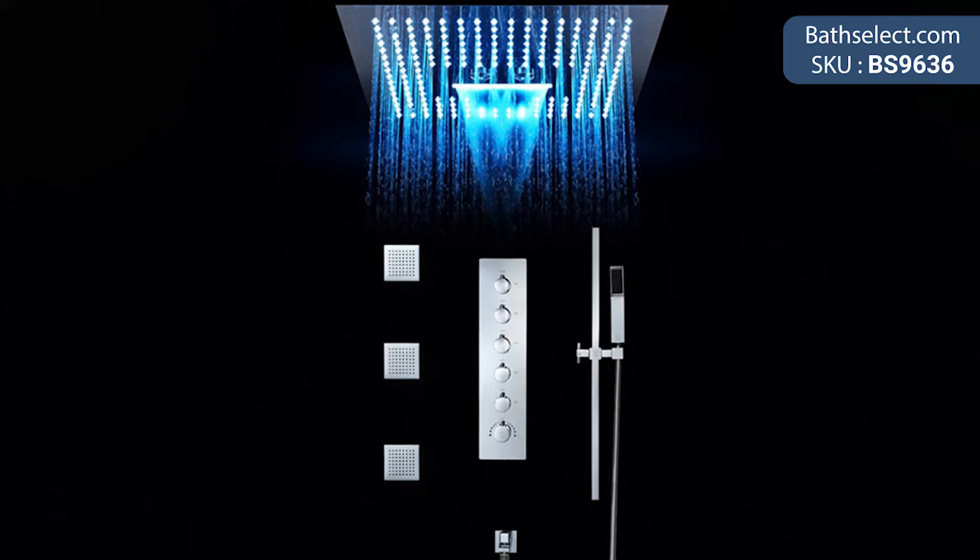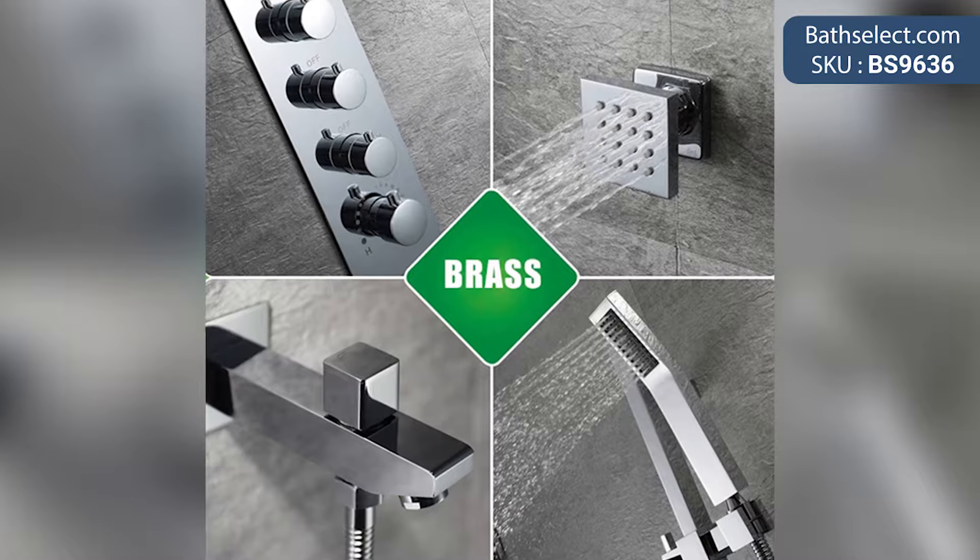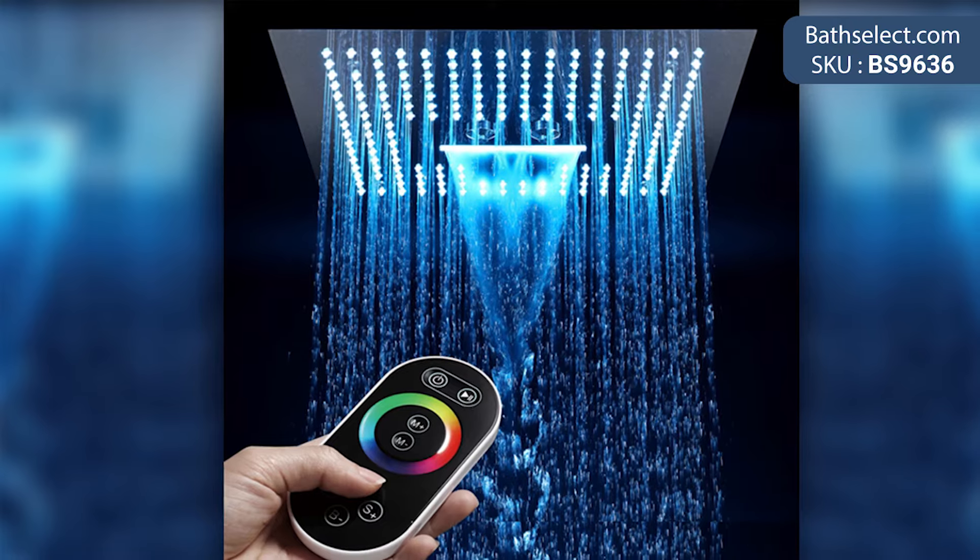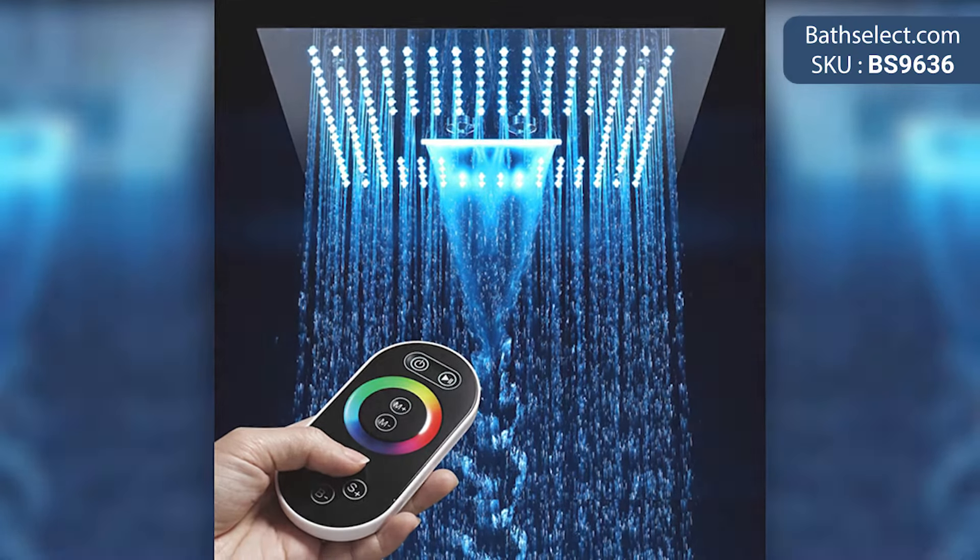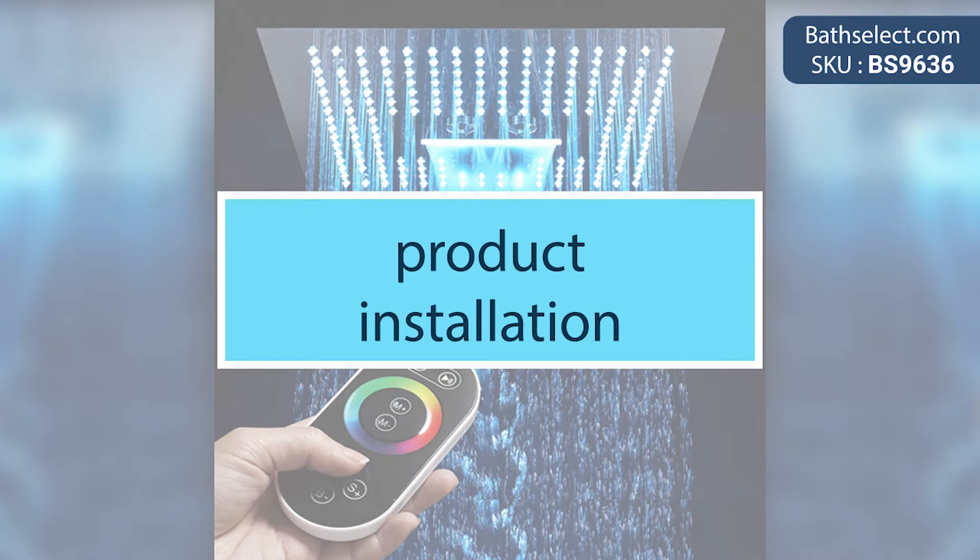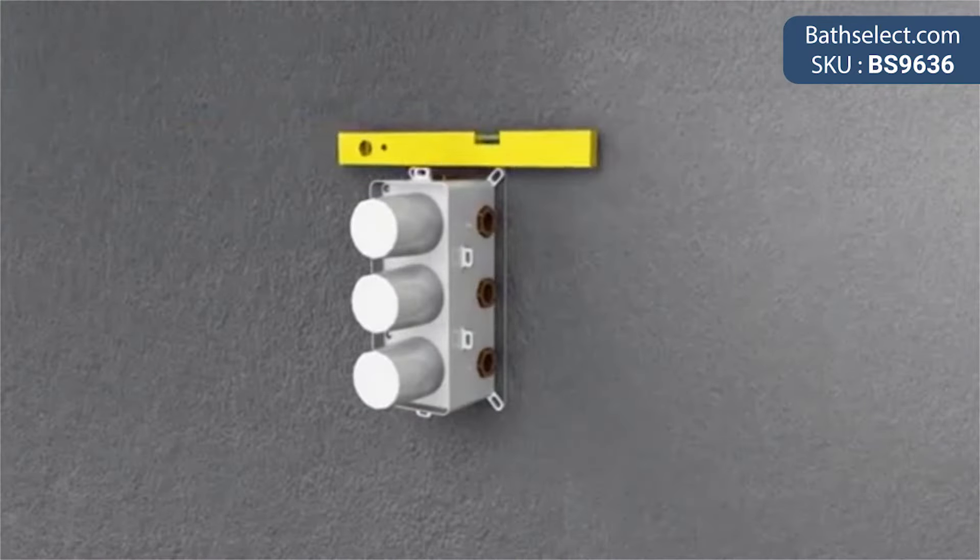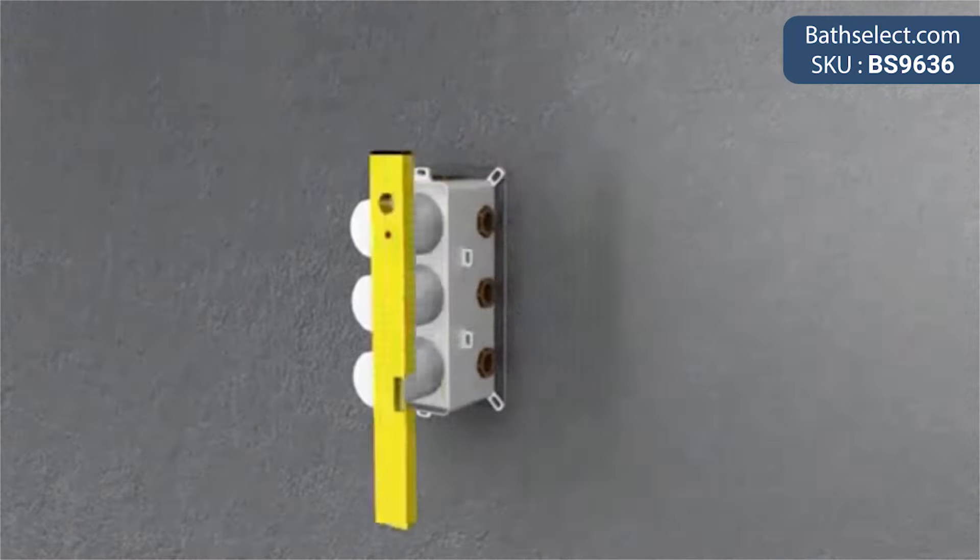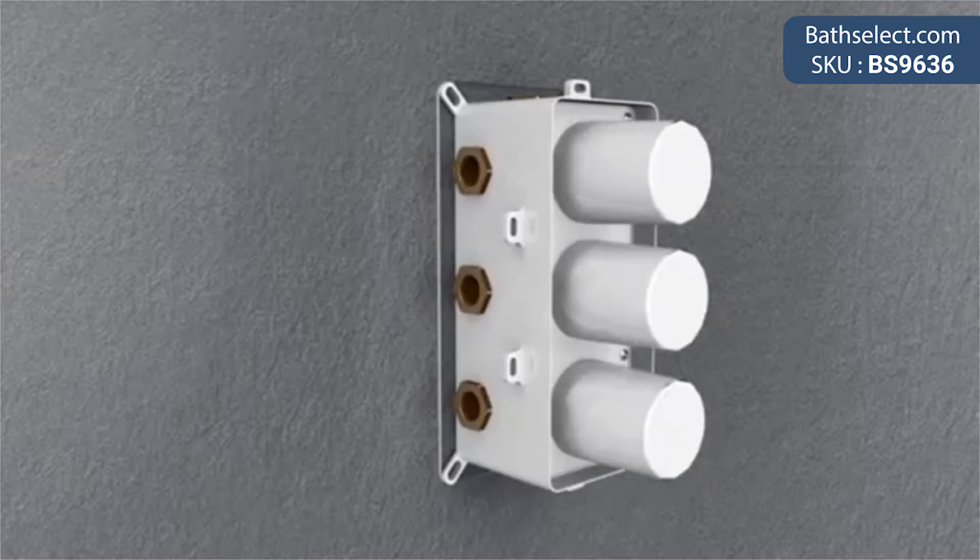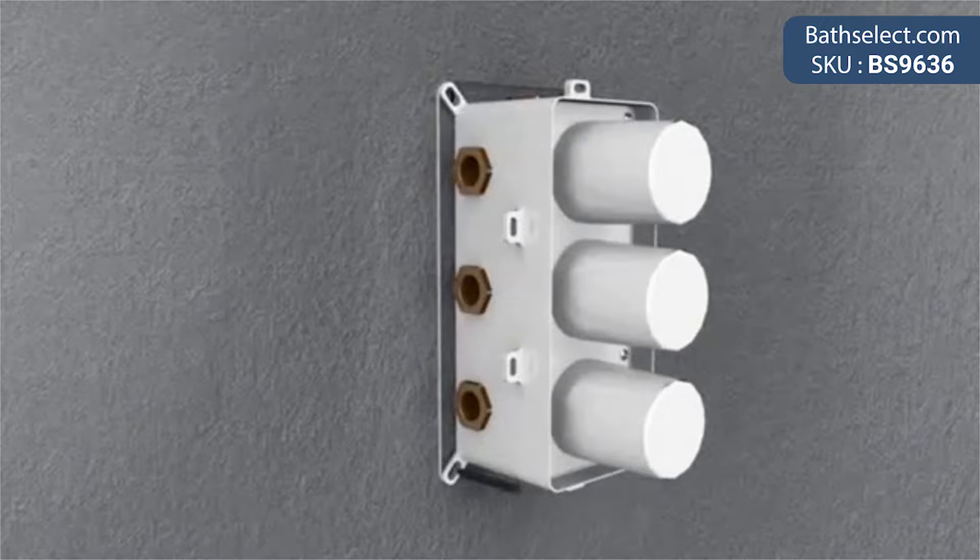Bass Select modern design LED rain shower head with chrome jet spray and sliding bar hand shower, product code BS9636. Bass Select square LED shower is a bathroom ceiling mount shower with multiple color changing features.